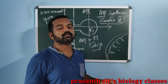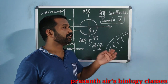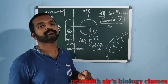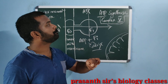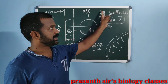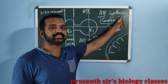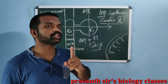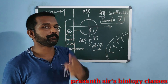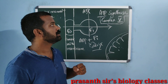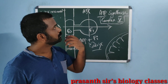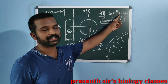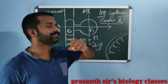When electrons pass from one carrier to another in the electron transport chain, they are coupled to ATP synthase — that is complex 5 — for the production of ATP. Now let us see complex 5, that is ATP synthase, in detail.